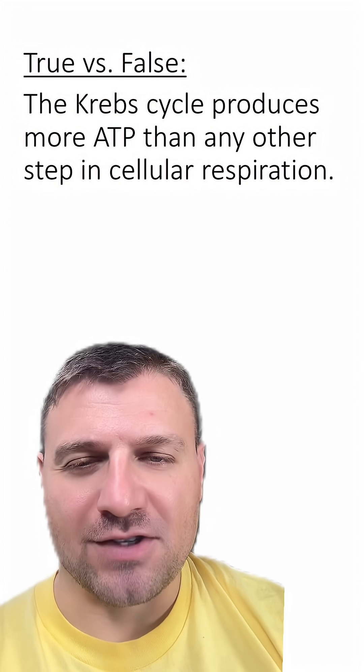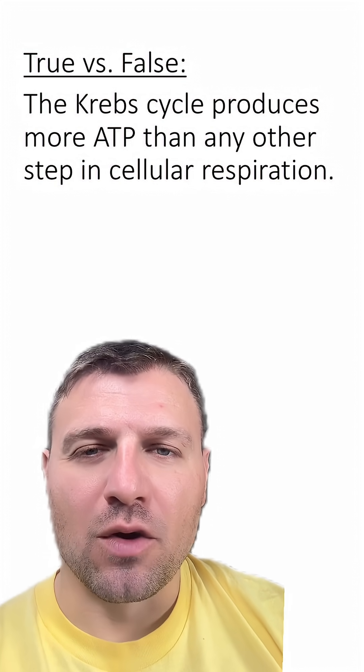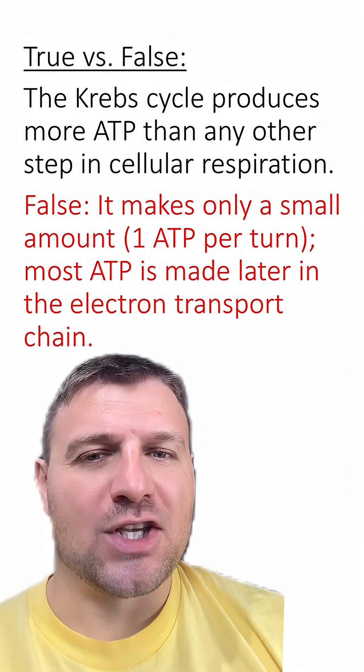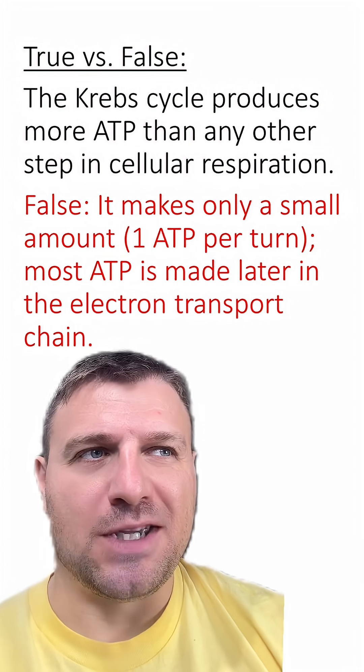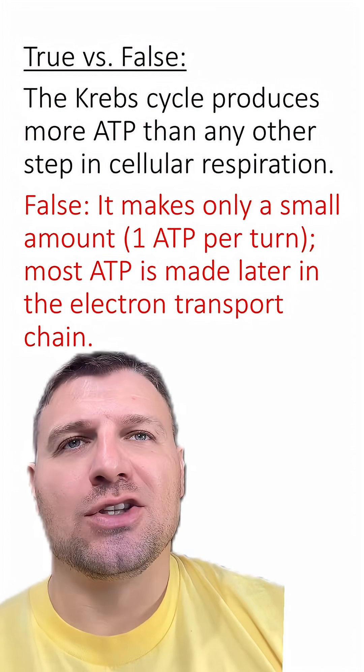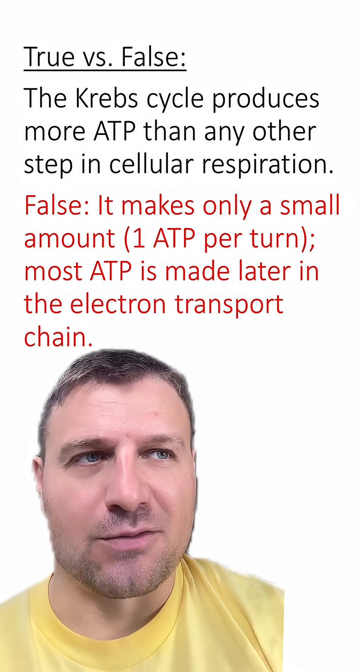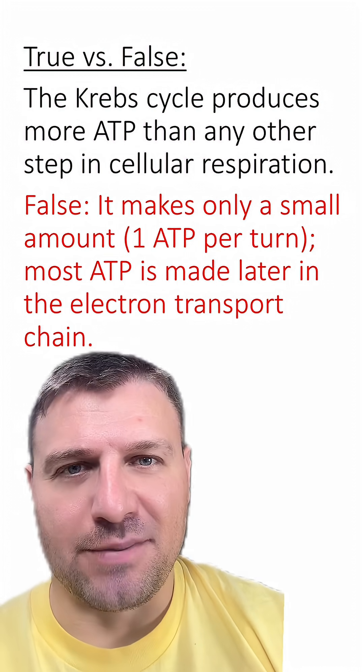The Krebs cycle produces more ATP than any other step in cellular respiration. Is this true or false? This is false. It actually only makes one ATP per turn, two ATP per glucose, so it doesn't really make a lot of ATP.